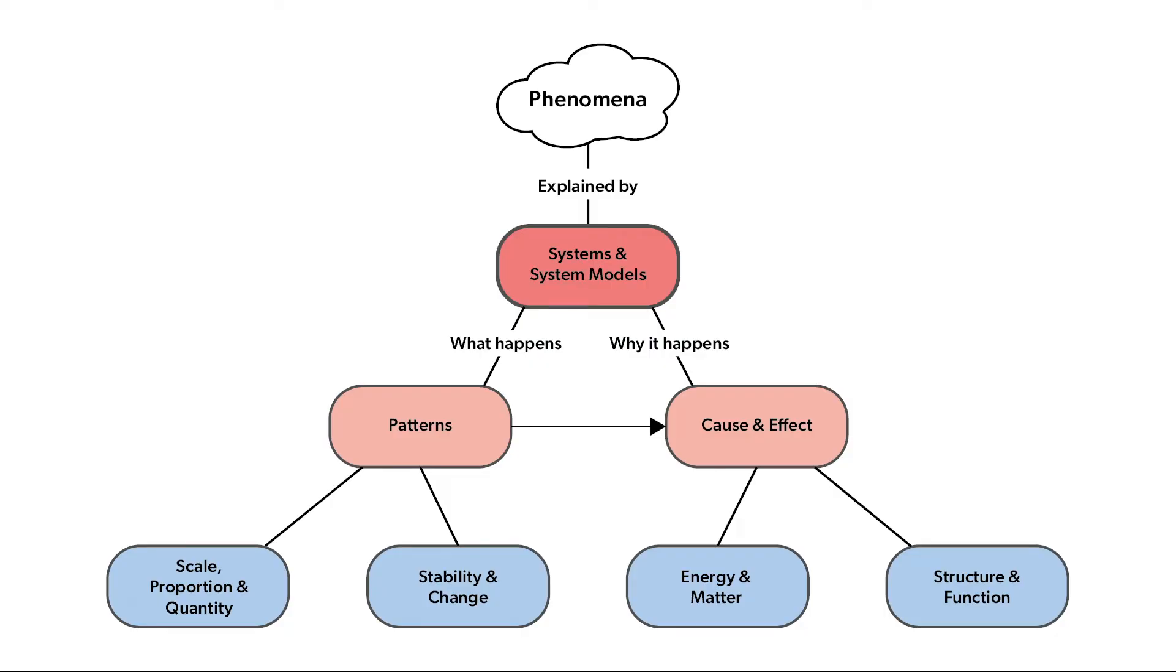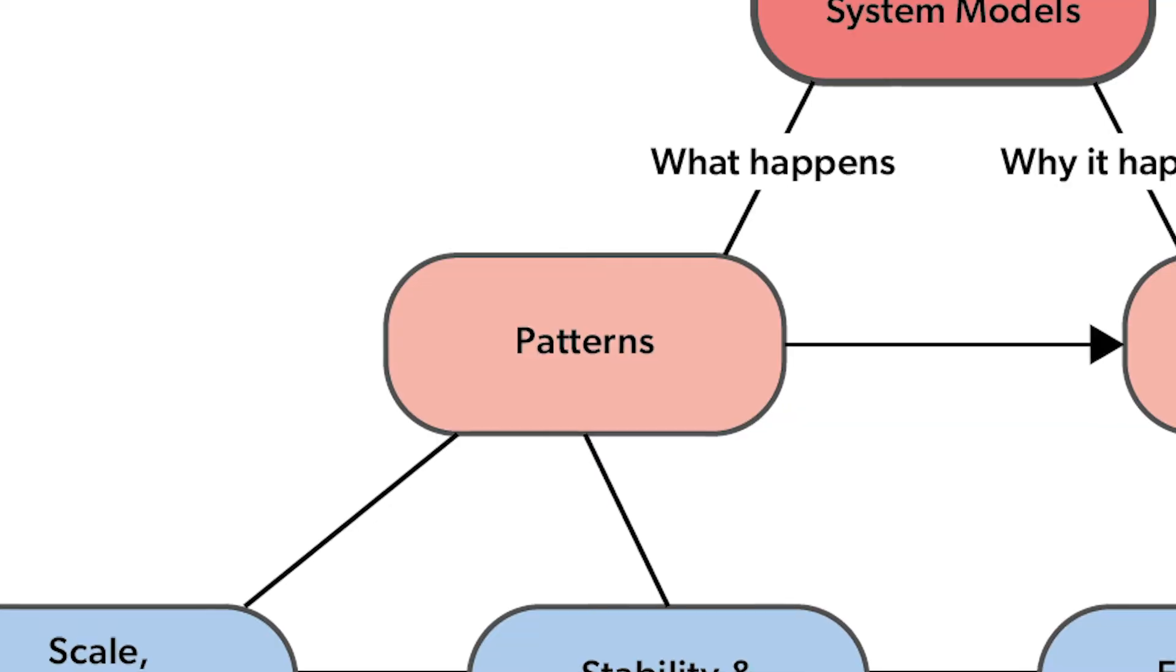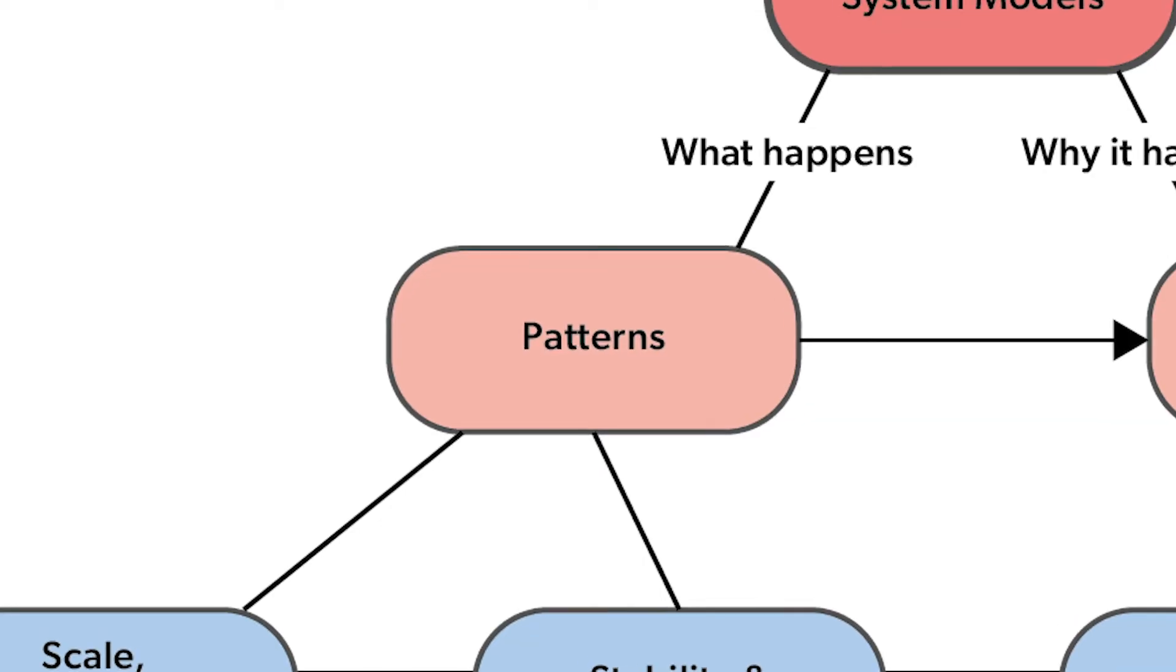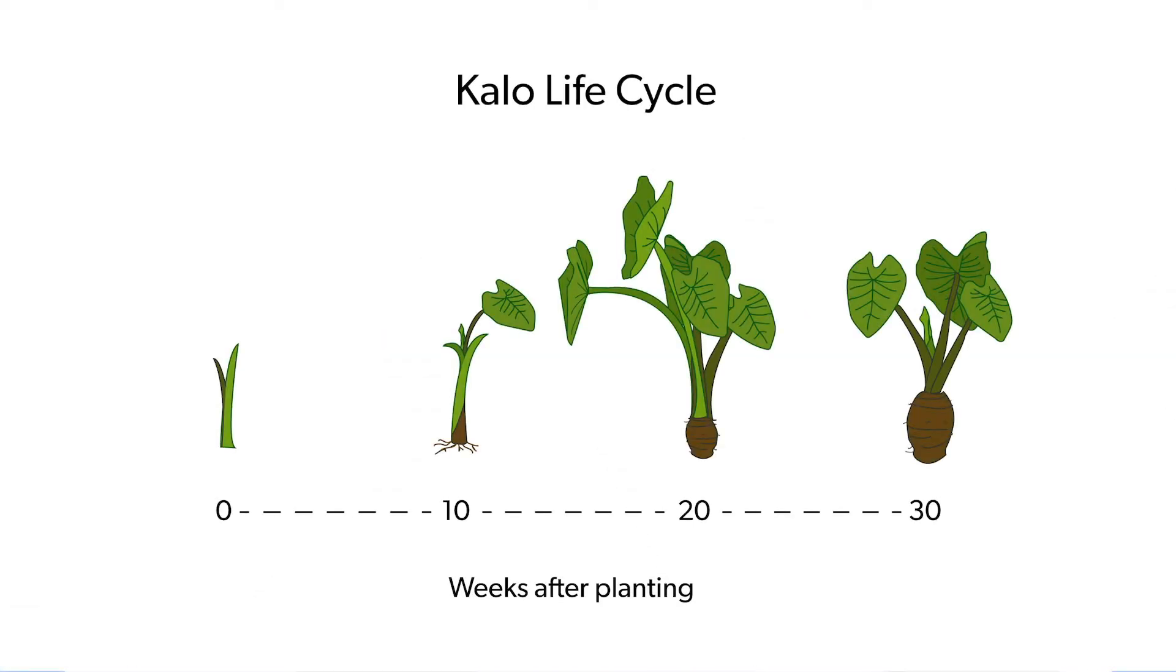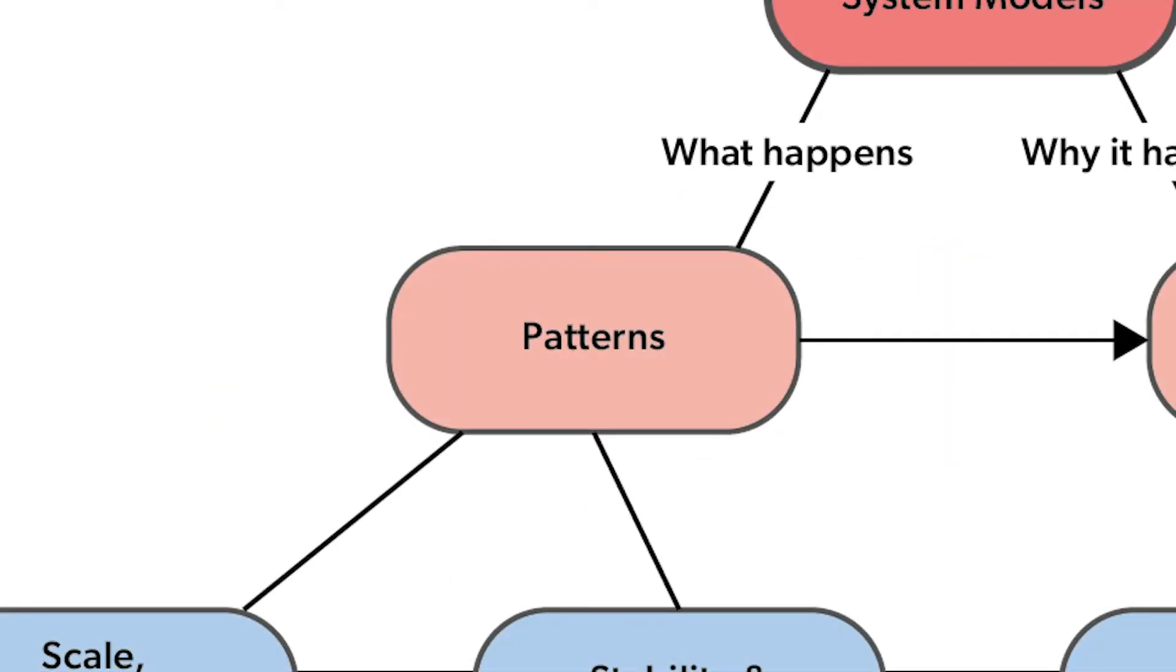One of the first steps in science is noticing patterns. Patterns help us organize and classify things. Patterns help us describe what is going on in systems. Colo has a pattern called a life cycle. We can use the pattern to classify a colo plant by a life cycle stage. Patterns also lead to questions about relationships and causes.